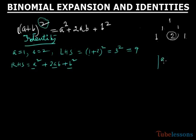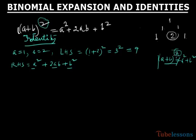(a+b)² is not equal to a² + b² only. The number of terms is one more than the index, so the number of terms must be 3. If you do the expansion of (a+b)³, it must contain 4 terms.